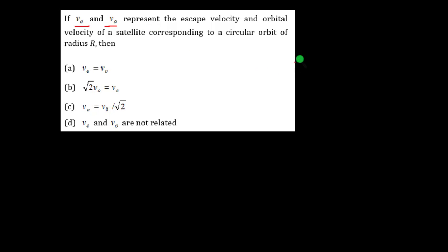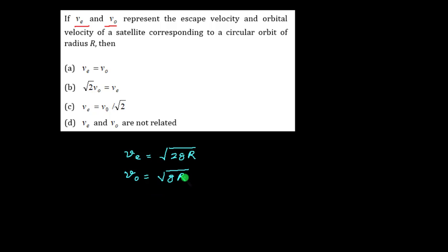Here, if Ve and Vo represent escape velocity and orbital velocity of a satellite corresponding to a circular orbit of radius r, let us talk about the formula. The escape velocity is given by Ve = √(2gr) and orbital velocity Vo = √(gr). We have already studied that orbital velocity is √(gr) when we are close to the surface of earth. So Ve = √2 · Vo, and we realize that this is the correct option.